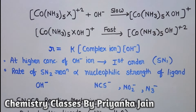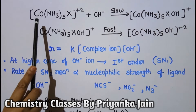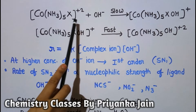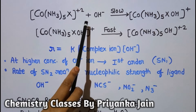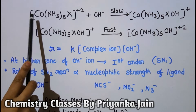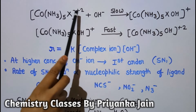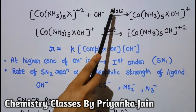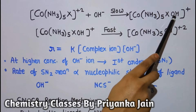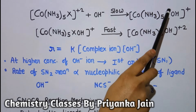However, there are some reactions that proceed neither by SN1 nor by SN2 mechanism. Consider a reaction of a pentammine cobalt complex with OH⁻ ions. If we assume the reaction proceeds by the SN2 mechanism, then in the slowest step [Co(NH₃)₅X]²⁺ reacts with OH⁻ to form an activated complex [Co(NH₃)₅X(OH)]²⁺, where X is a halide ion such as Cl⁻, Br⁻, or I⁻.